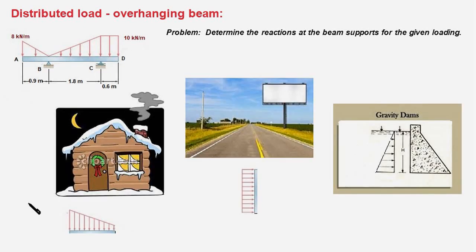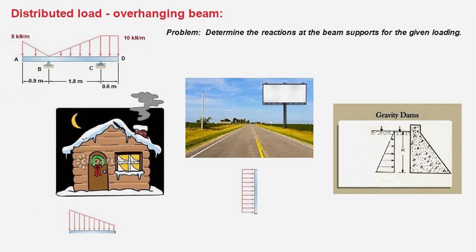Here are some more examples of distributed load. The layer of snow formed on the rooftop is an example of distributed load. This point corresponds to this point and this end is shown here. Because of the drifting of the snow it gets accumulated at this point, and therefore you have a higher load compared to the load at this end.